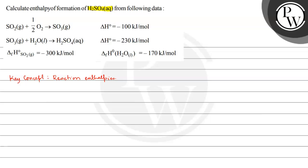So the formation enthalpy would be H2 gas plus sulfur solid plus 2O2 gas giving H2SO4 aqueous. We have to calculate the enthalpy change in this reaction.